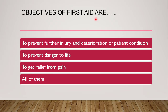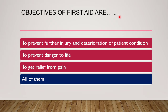Next question: objectives of first aid are — to prevent further injury and deterioration of the patient's condition, to prevent danger to life, to get relief from pain, or all of them? The correct answer is all of them. First aid objectives include preventing danger to life, minimizing further injury and deterioration, providing relief from pain, and ensuring medical help arrives at the earliest.